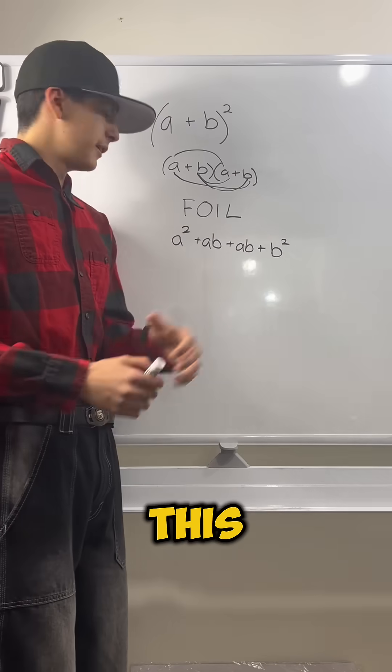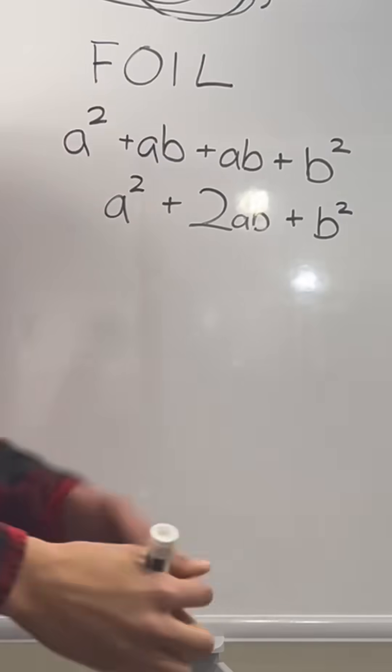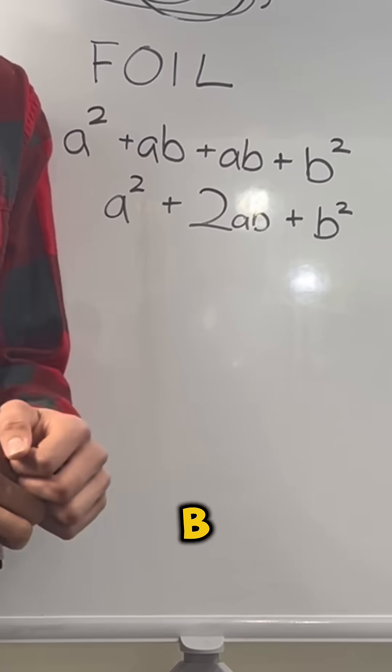We can rewrite this as a squared plus 2ab plus b squared.